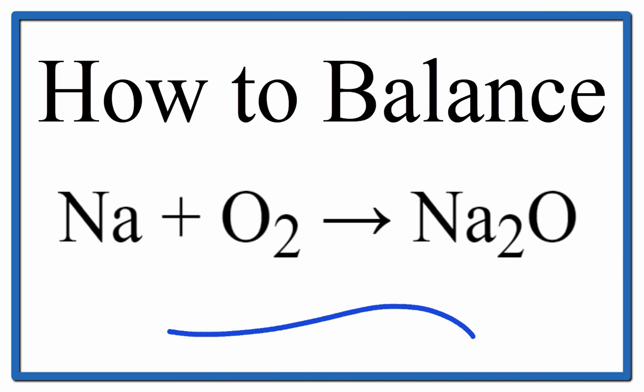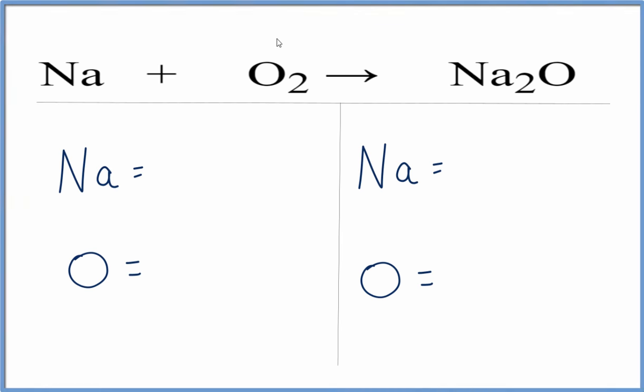To balance this equation, Na plus O2 gives us Na2O. Let's first write down the number of atoms we have on each side of the equation.